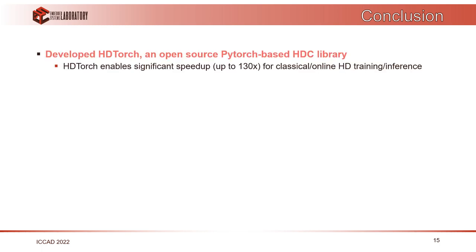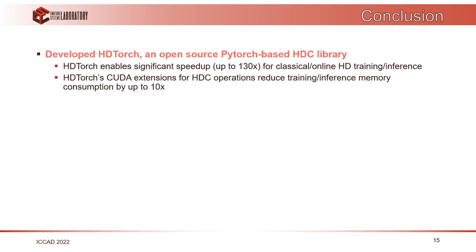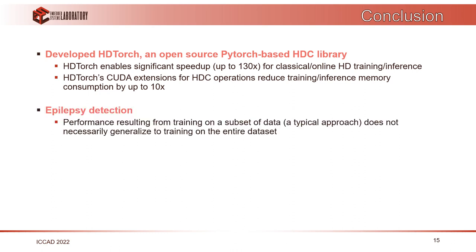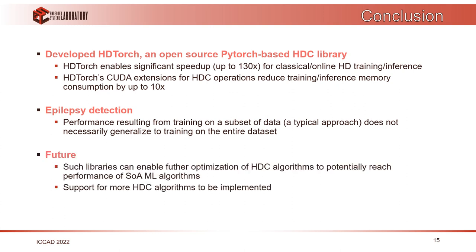To conclude, we developed HDTorch, an open source Python-based HDC library that enables significant runtime speedup for both classical and online HD learning as well as inference. With CUDA extensions, we also reduce memory up to 10 times. We showed that performance resulting from training on a subset of data does not necessarily generalize to training on the entire dataset, and this must be taken into account when evaluating HDC algorithms. In future, such libraries can enable further optimization of HDC algorithms to potentially help them reach the performance of state-of-the-art machine learning algorithms, though support for more HDC algorithms is still needed.